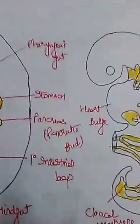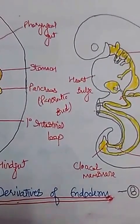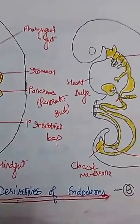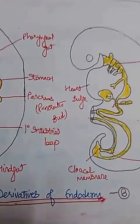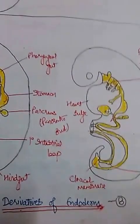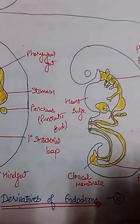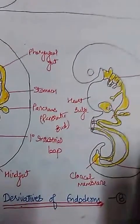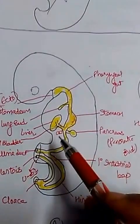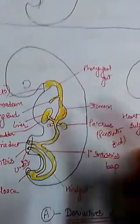To summarize: the gut tube, the parenchyma of the liver including hepatocytes and hepatic bud, and the parenchyma of the pancreas including both exocrine and endocrine parts all arise from endoderm. The respiratory diverticulum or lung bud is also endodermal in origin, and the allantois is also endodermal in origin.